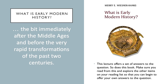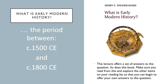The short answer to what Early Modern History is, is that it is the bit immediately after the Middle Ages and before the very rapid transformations of the past two centuries. Early Modern History covers the period between roughly 1500 and 1800 — in other words, the 16th, 17th, and 18th centuries of the Common Era.